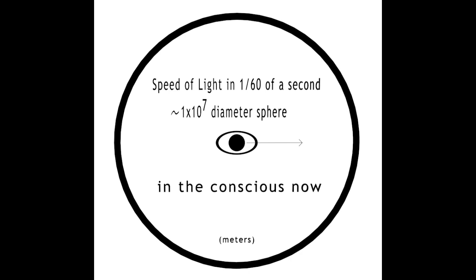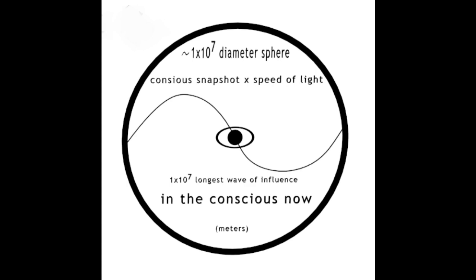When you multiply that by 2, you get 1 times 10 to the 7 meters. This implies that the longest standing wave that may exist within our conscious snapshot is 1 times 10 to the 7 meters.